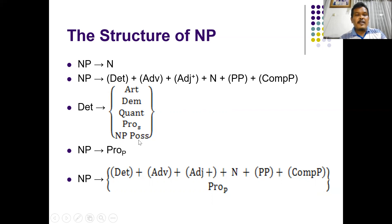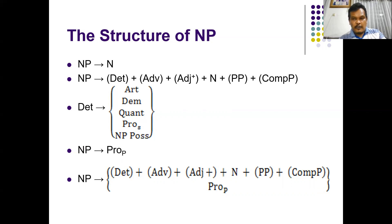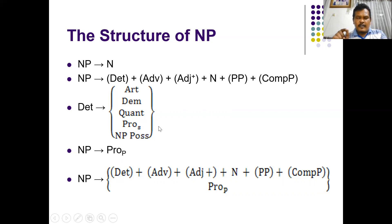Another element of a determiner is possessives. Possessive pronouns include my, your, our, their, his, her, and its. There is also NP-possessive — that is, a noun phrase in possessive form. For example, 'Mike's book': Mike's (Mike apostrophe s) is the noun phrase indicating possession. That is NP-possessive. So these are all the elements of a determiner.